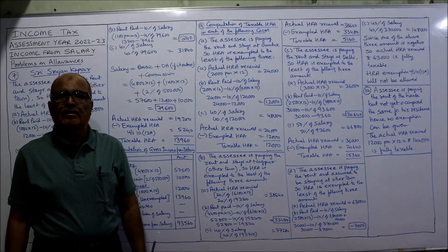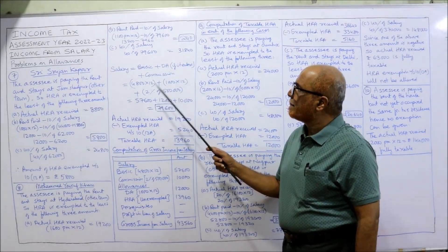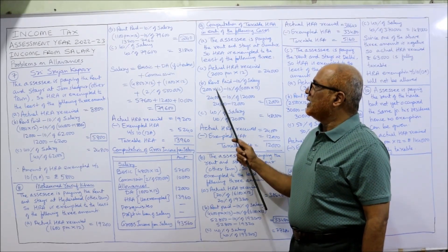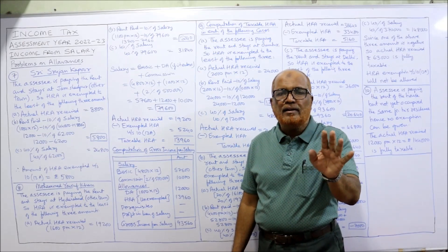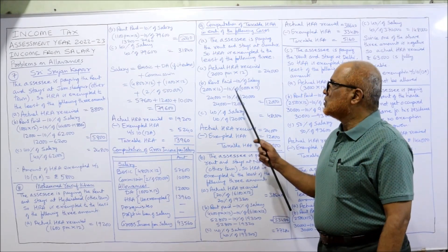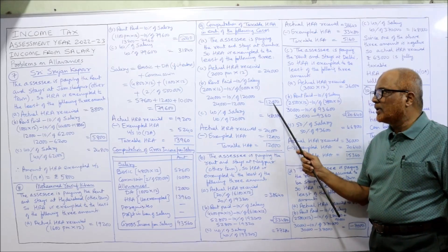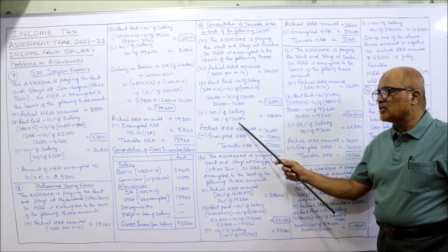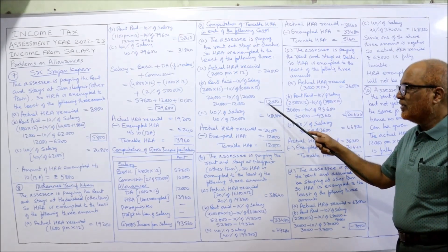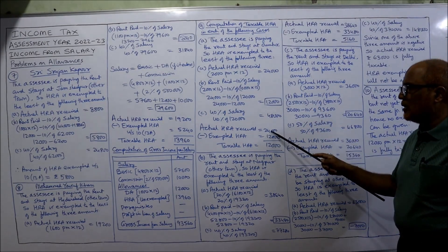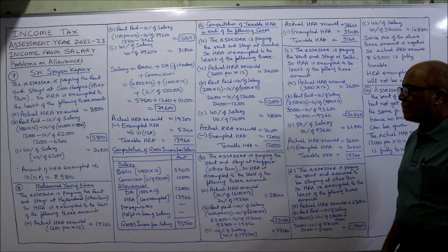Rent paid minus 10% of salary: salary means basic pay only — DA is not entering for retirement benefit, so we exclude it. Basic Rs 10,000 × 12 = Rs 1,20,000; 10% = Rs 12,000; Rs 24,000 − Rs 12,000 = Rs 12,000. 40% of Rs 1,20,000 = Rs 48,000. The least is Rs 12,000, which is exempted. Taxable HRA = actual HRA received Rs 24,000 minus exempted Rs 12,000 = Rs 12,000. Case A completed.